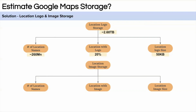For location image storage: 260 million locations, assuming 20% have images, with an average of 5 images per location at 5 MB each. These are not user-generated images — only images put by the owner. If user-generated images were considered, the count would be around 100 to 150 per location. The total image storage comes to around 1.3 petabytes. Adding all components together, the total is approximately 1.3 petabytes, as image storage dominates.